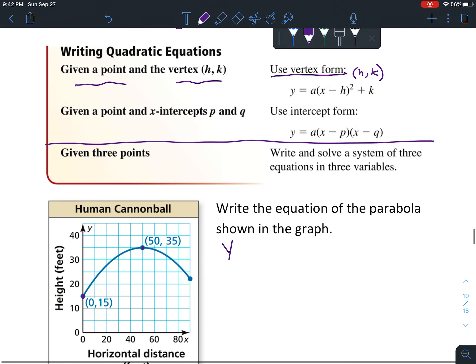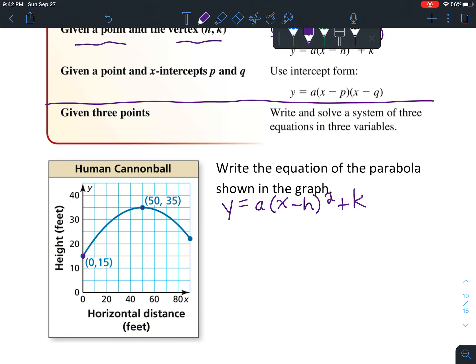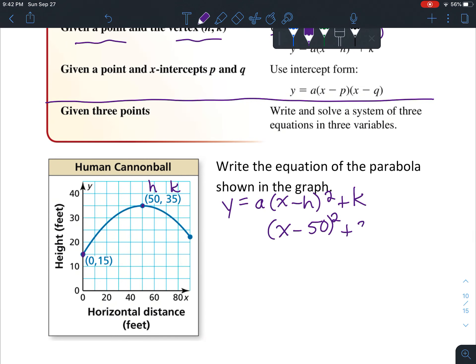Looking at vertex form, y = a(x - h)² + k, we already know what h and k are. If h is 50, fill that in, and k is 35. We'll fill in the things we know.